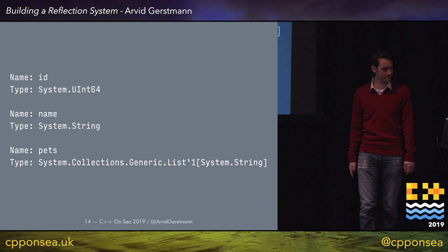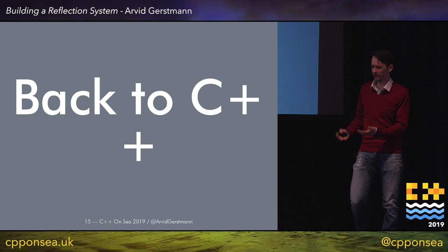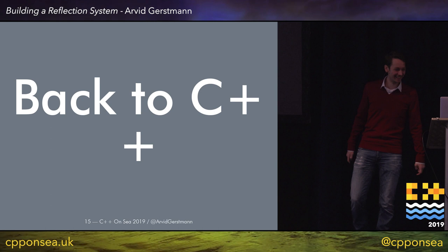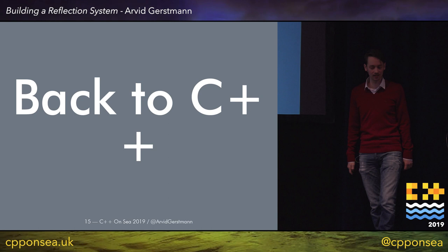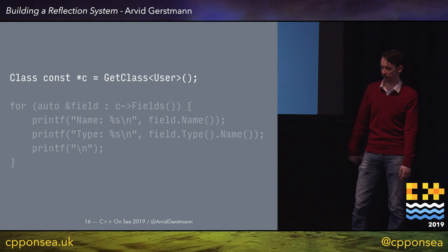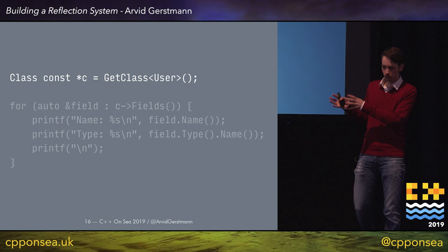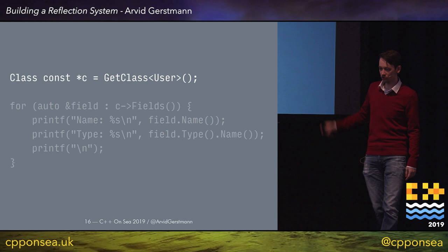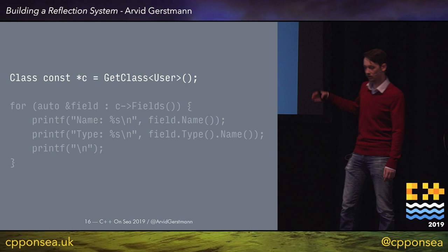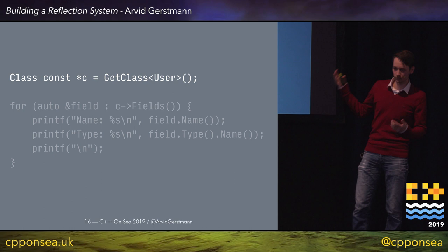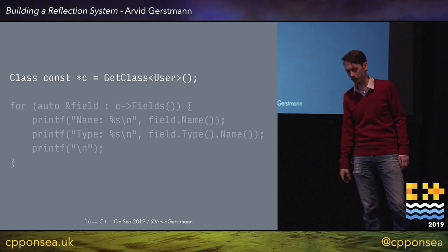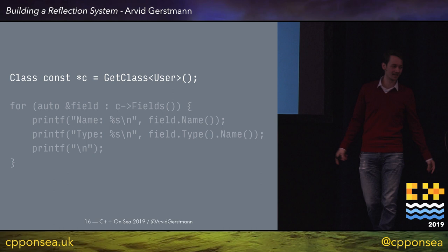The code we've written is C# and we are at a C++ conference, so let's translate this into a C++ equivalent. The equivalent calls get_class, getting a class which has the type and reflection information attached to our user struct. We then use the for-range loop to iterate over the fields and print the name and type. However, this is not standard C++ — we don't have a get_class function available. The goal of this presentation is to build this get_class function.